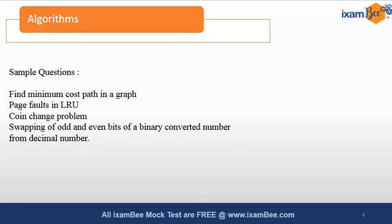Another algorithm question involves swapping odd and even bits of a binary number converted from a decimal. First convert the decimal number to binary, then swap the odd and even bits, and you can provide the output in decimal as well. These kinds of questions are likely to appear as 40-marker questions.